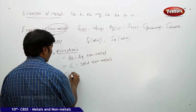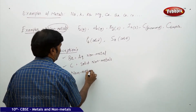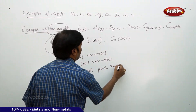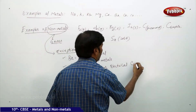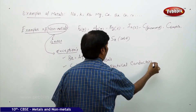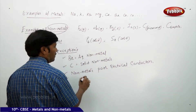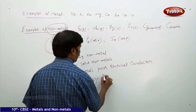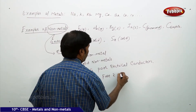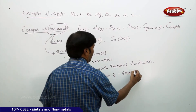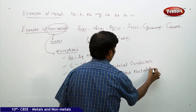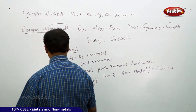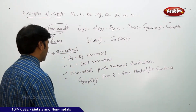In general, non-metals are poor electrical conductors. But as an exception, carbon graphite — because of its free electrons — is a good electrolytic conductor.